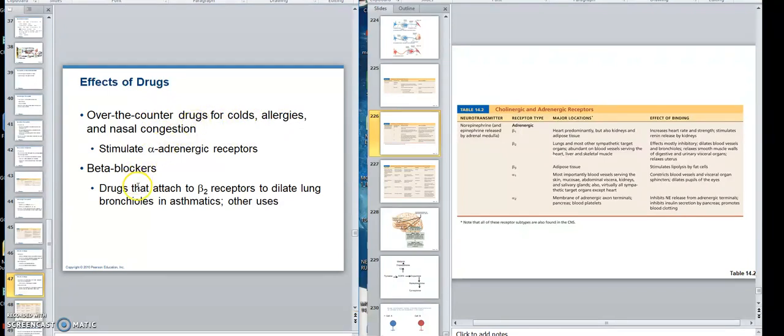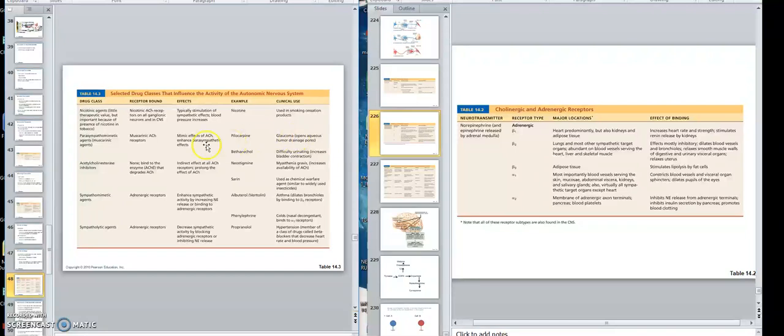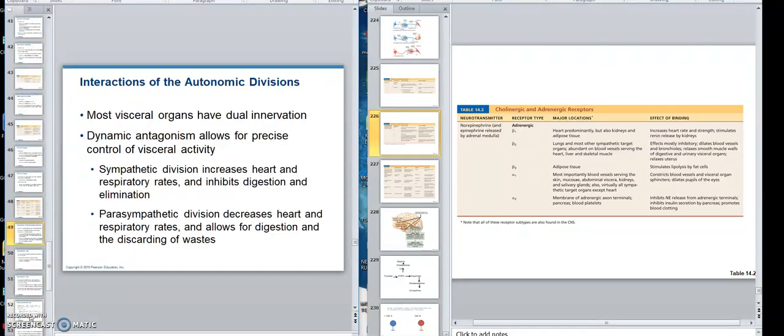A beta blocker can come in and attach to beta 1 in the heart. That would slow the heart down. It could also open up the lungs. So here we are. Here's some drugs, and you can look at them yourself. Sympathomimetic drugs means it simulates, like ephedrine for example. Ephedrine would be a sympathomimetic drug. There are some that will simulate acetylcholine. You can glance at that. So we'll close here and start right there. Actions of auto...